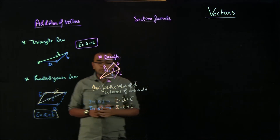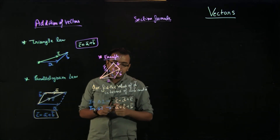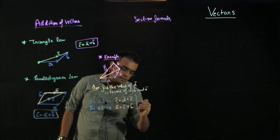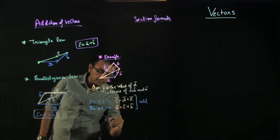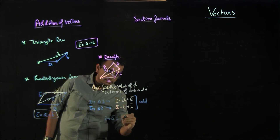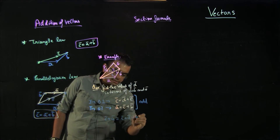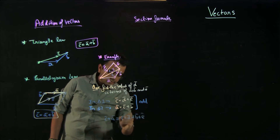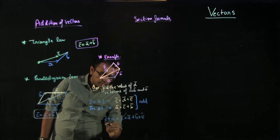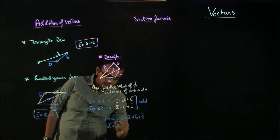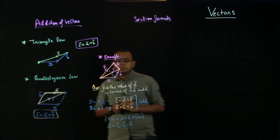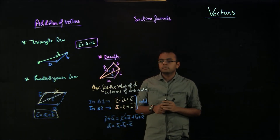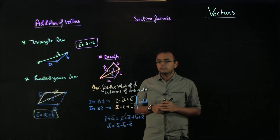Now we can eliminate C vector by adding the two equations. We get: C vector plus A vector equals C vector plus D vector plus B vector plus E vector. The C vectors cancel out, so D vector equals A vector minus B vector minus E vector.